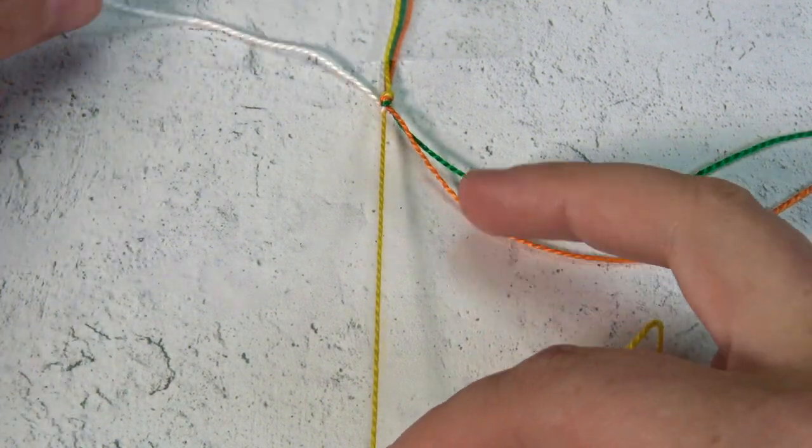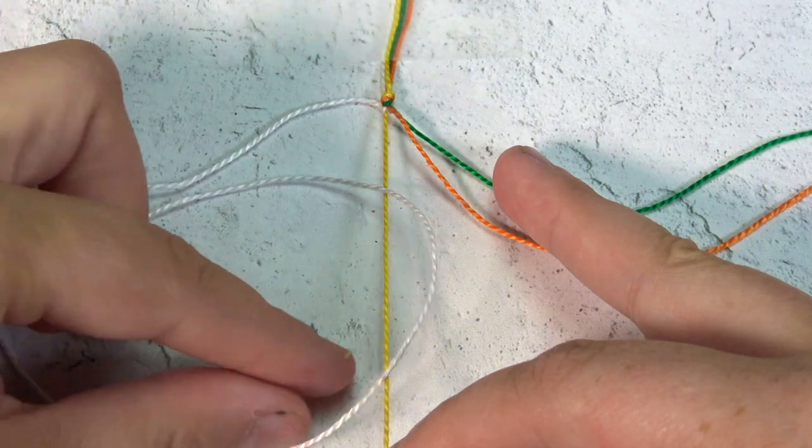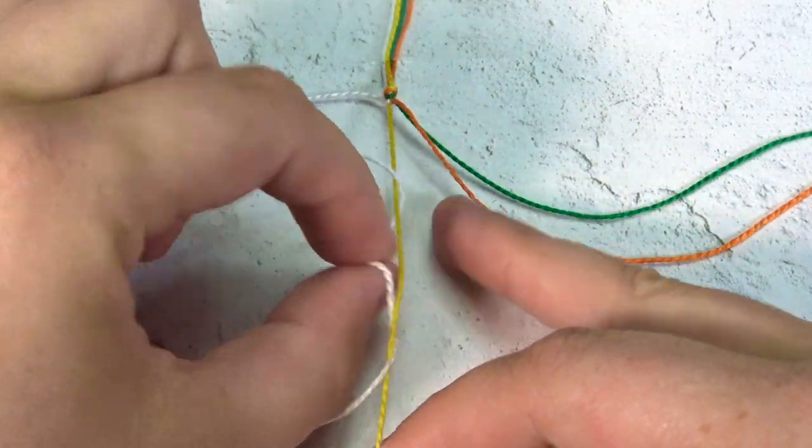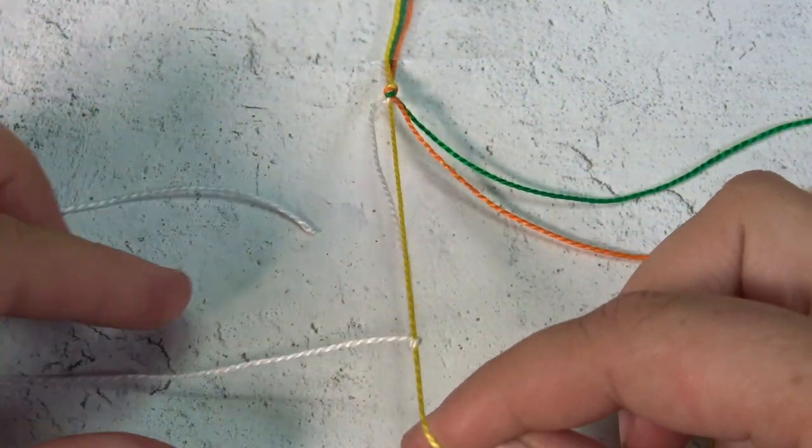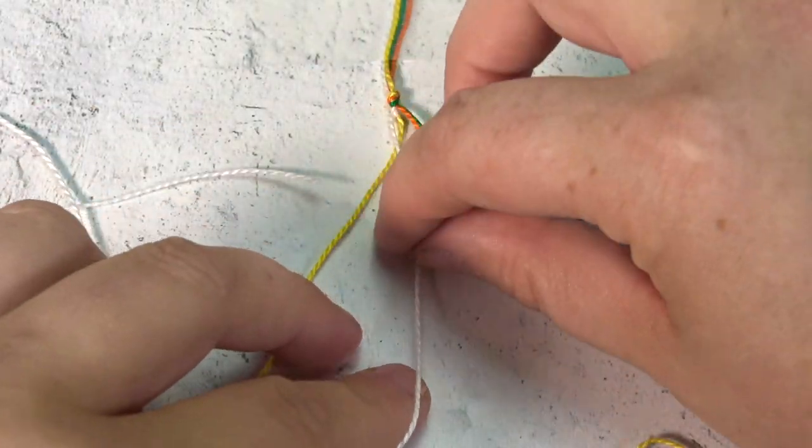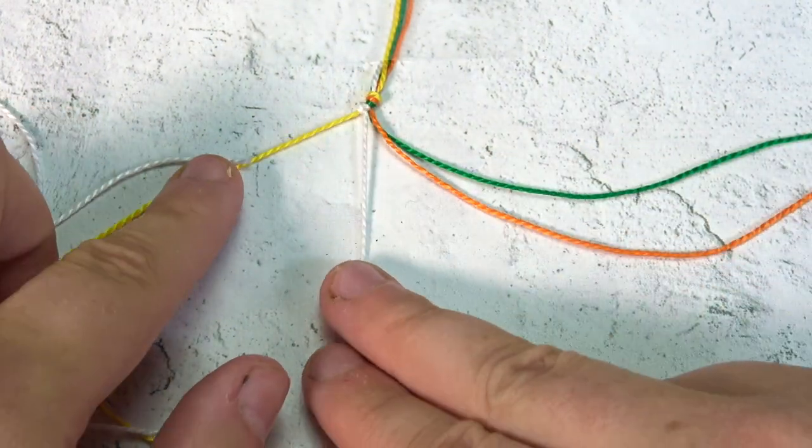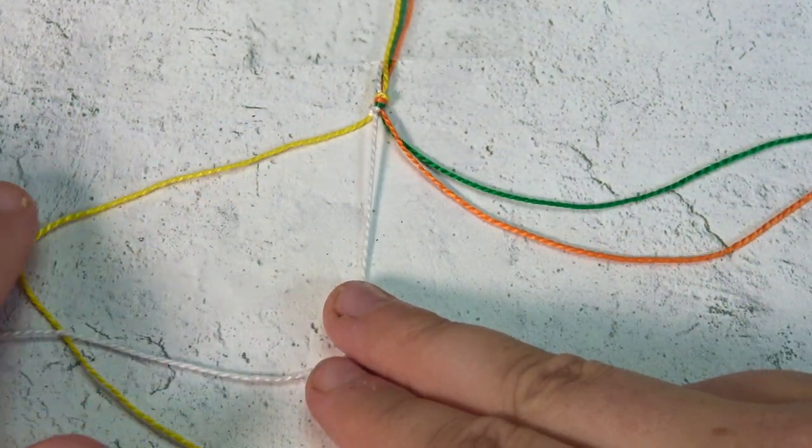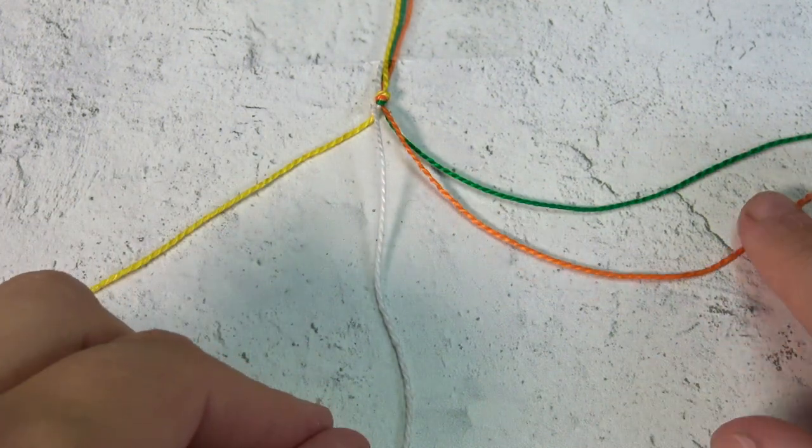You will do two stitches on each string. So over, go underneath, grab it through, hold the yellow tight, and pull tight. Now the white string is on the right hand side of the yellow string.